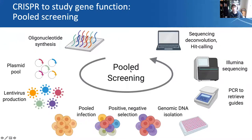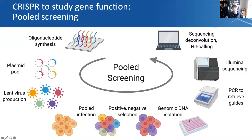A mainstay of working with CRISPR technology in mammalian cells is pooled screening. Pooled screening begins with the synthesis of oligonucleotides, cloning that pool of oligos into a plasmid, producing lentivirus, and then delivering that pool of lentivirus into a population of cells, applying some sort of selective pressure, followed by isolation of genomic DNA, PCR to retrieve the guides, luminous sequencing to read out those PCR products, and then sequence deconvolution and calling of hits based on what guide RNA is enriched or depleted given the selective pressure.